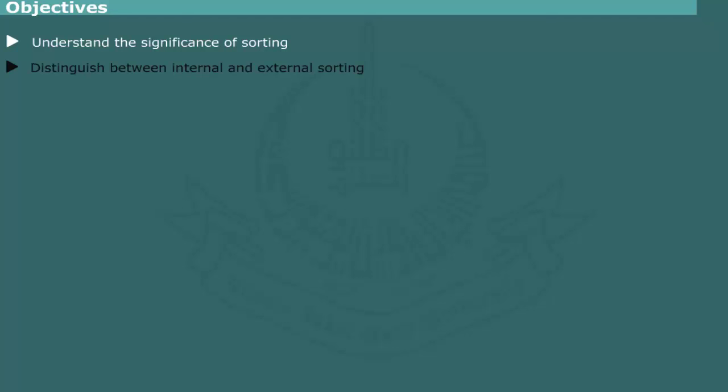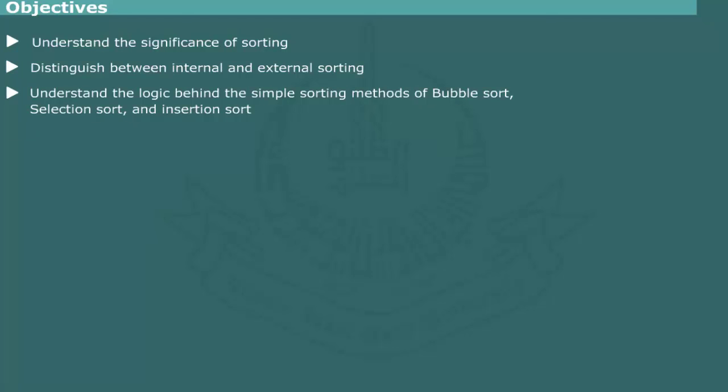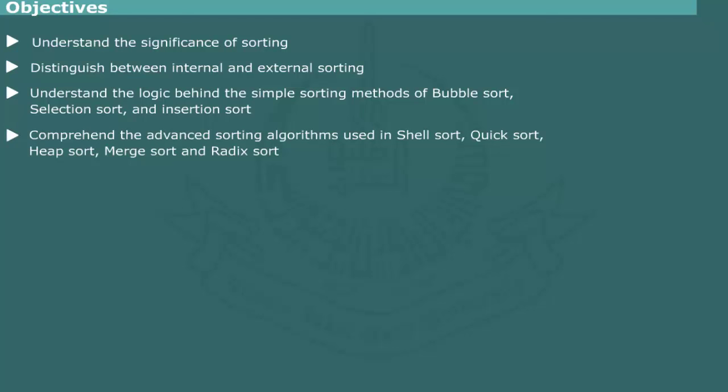Objectives: After completing this unit, you should be able to understand the significance of sorting, distinguish between internal and external sorting, understand the logic behind the simple sorting methods of Bubble Sort, Selection Sort, and Insertion Sort, and comprehend the advanced sorting algorithms used in Shell Sort, Quick Sort, Heap Sort, Merge Sort, and Radix Sort.